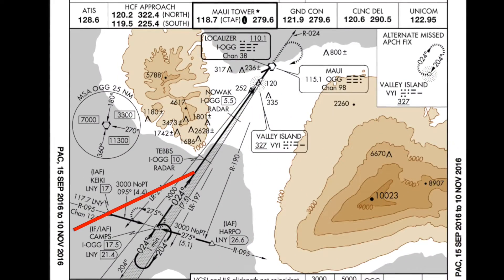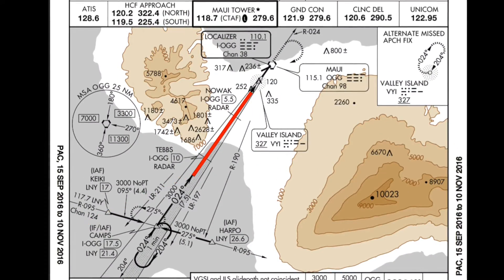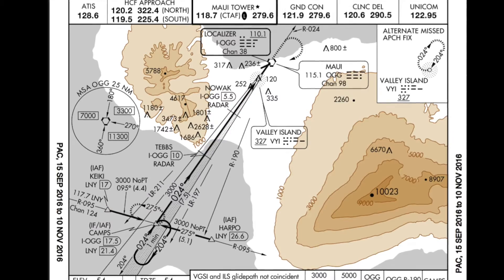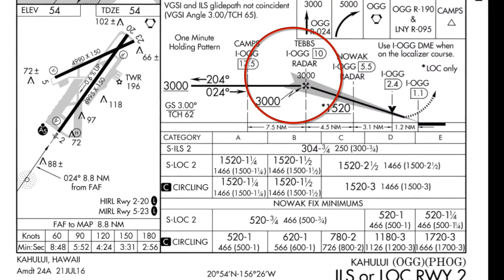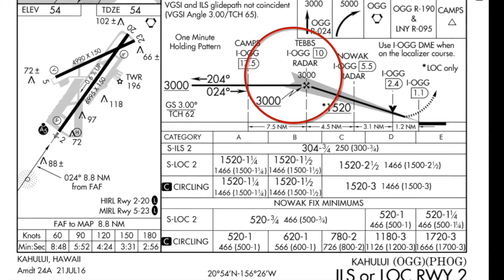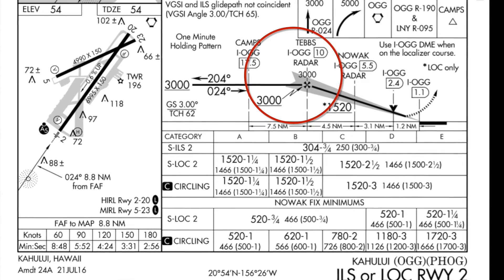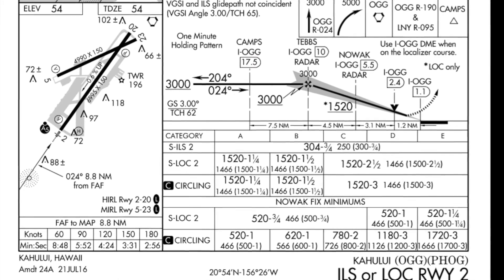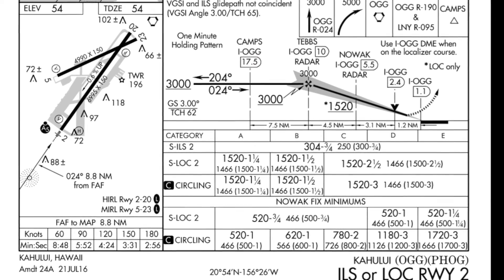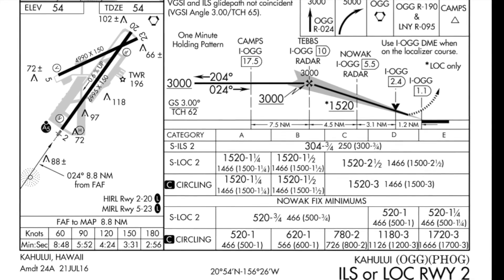We want to position our plane to fly on an intercept heading to the localizer. Looking at the vertical profile of the chart, we can see that we need to be at 3000 feet until TEBS. TEBS is the latest point we can intercept the localizer at, and at which our plane will start to descend on the glide slope. Let's hop into our 737 and see it in action.